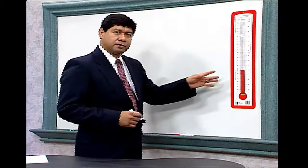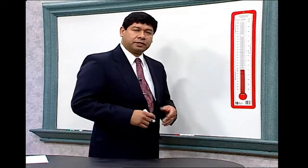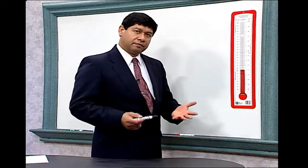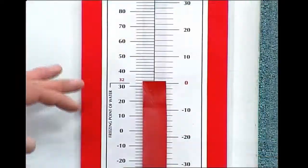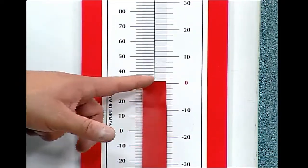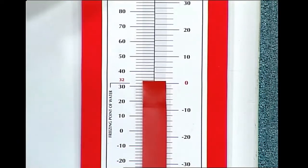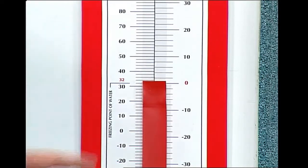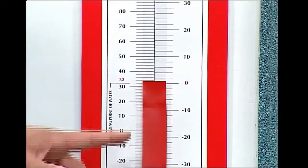For example, this thermometer is a very good device to help us fully understand what is meant by negative numbers and positive numbers. We know that water freezes at zero degrees Celsius, as indicated here. The numbers above that are positive numbers. The numbers below zero are negative numbers.